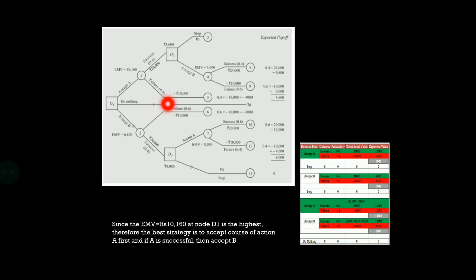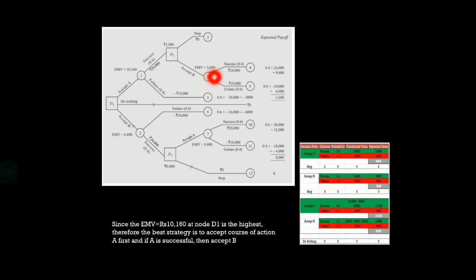The failure probability is 0.4 and you will lose 10,000 — that is being notified here. I have calculated the payoff here. If it is success, the probability is 0.6 and you will get 20,000. Then you reach a decision node. The decision to be made here is: if you accept A and it is a success, you can accept B or you can stop. If you stop, you will get nothing. But if you are accepting B, then something happens — if you accept B and it goes for a success, you will get a success rate of 0.4 and you will get 24,000 rupees. Once you accept A and then accept B, but unfortunately if B fails, you lose minus 10,000.